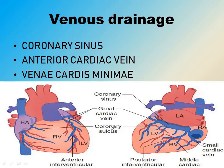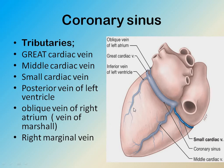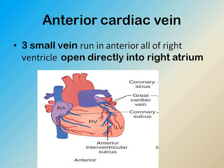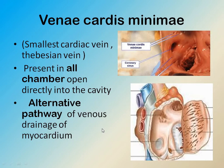Venous drainage: the coronary sinus receives deoxygenated blood from the great cardiac vein, middle cardiac vein, small cardiac vein, posterior vein of left ventricle, oblique vein of left atrium, and right marginal vein. This drains directly into the right atrium. The anterior cardiac veins are three small veins running anterior to the right ventricle and open directly into the right atrium. Venae cordis minimae, also known as Thebesian veins, are the smallest cardiac veins; deoxygenated blood drains directly from the heart into the cavity and represent an alternative path of venous drainage of the myocardium.